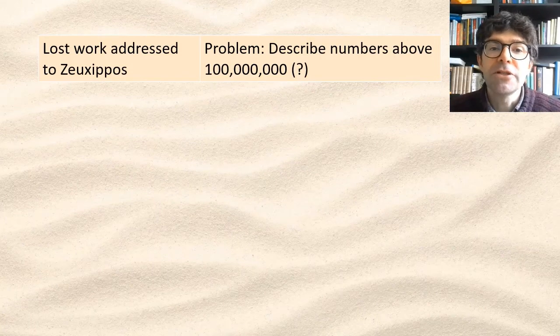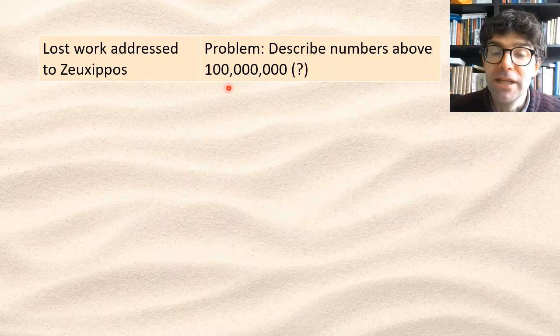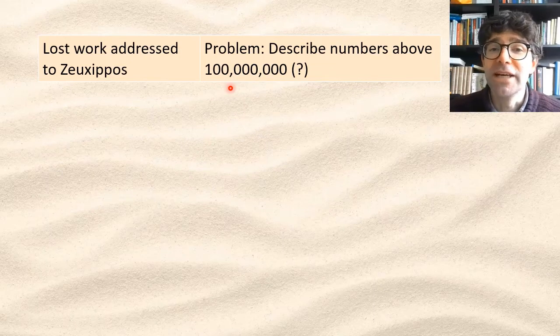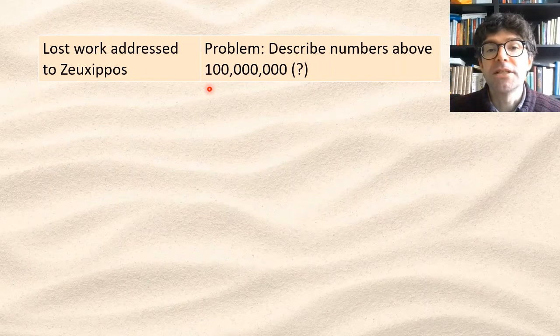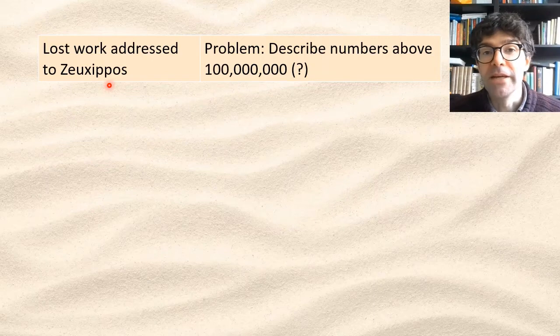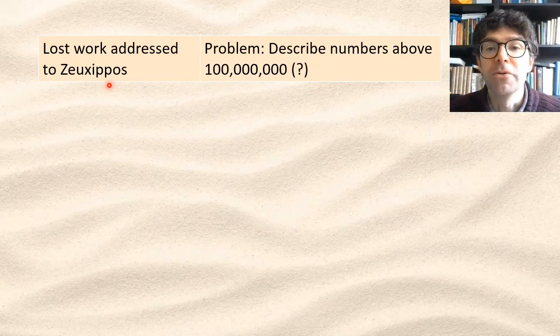He had previously invented a new number system for dealing with numbers above 100 million, or as he would have said 10,000 times 10,000, and discussed it in a lost work addressed to someone called Zucsippus who was probably a fellow scientist but we don't know much about him.